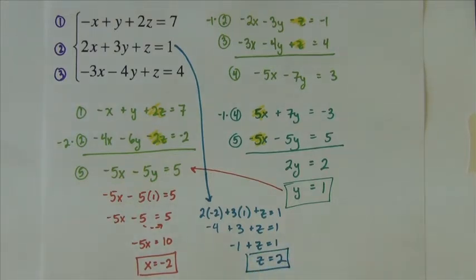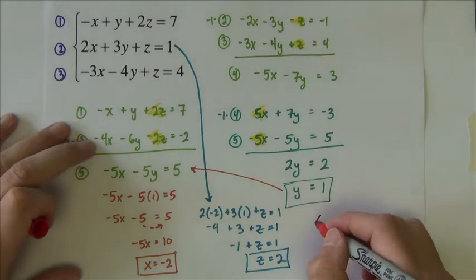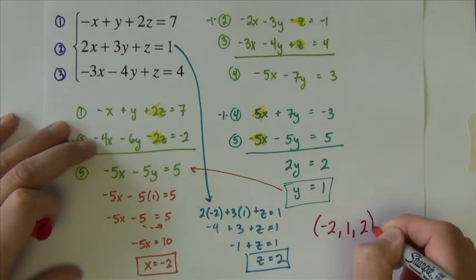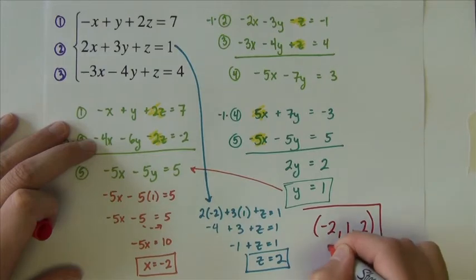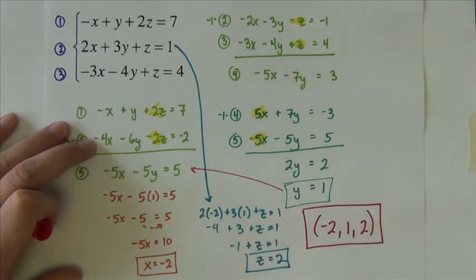We have it. The solution is negative 2, 1, 2. That's x, y, z.